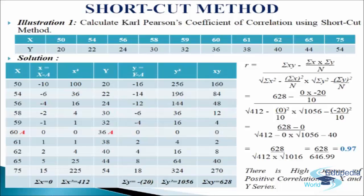Now in the next column we will write y variables: 20, 22, 24, 30, 32, 36, 38, 40, 44, and 54. In this we have taken 36 as the assumed mean.